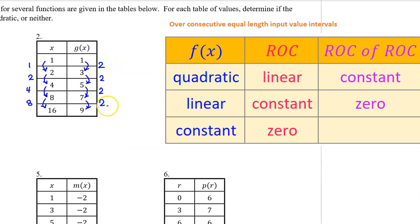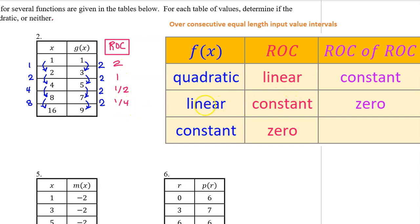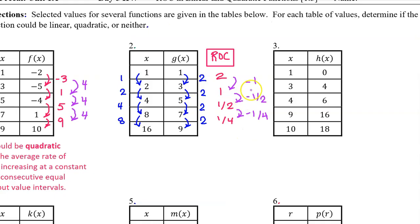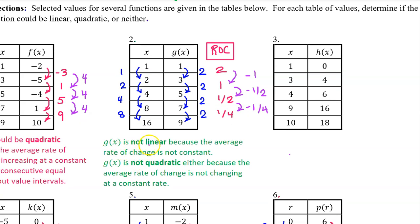For number 2, here are the output value changes and here are the input value changes. Notice that we do not have consecutive equal-length input value intervals. For this reason, we need to calculate the actual average rate of change by dividing 2 over 1, 2 over 2, 2 over 4, and 2 over 8. Since the average rate of change is not constant, g(x) is not linear. And since the rate of change is not changing at a constant rate, g(x) is not quadratic either.